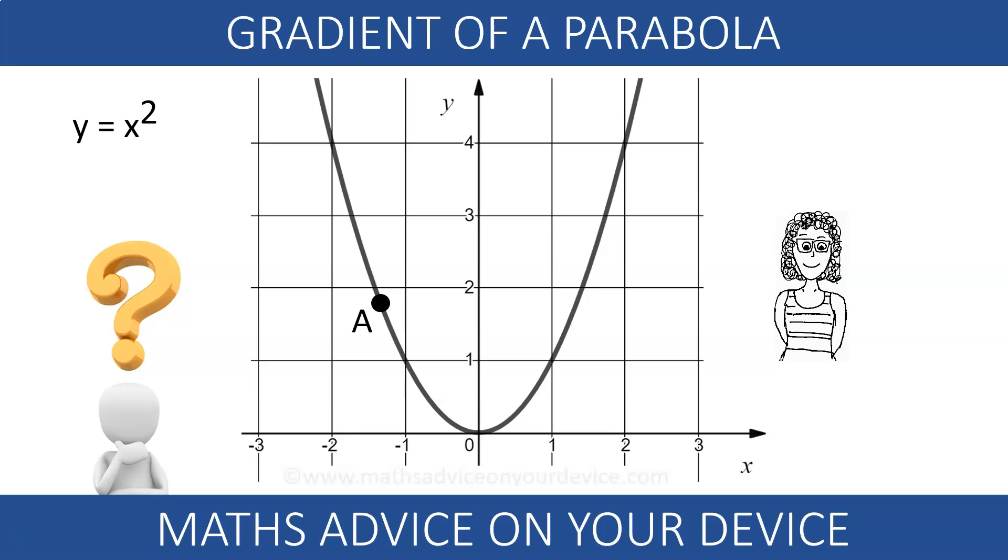In fact, we can use straight lines to estimate the gradient. The gradient of a parabola at A is the gradient of the line that is tangent to the parabola at that point A.